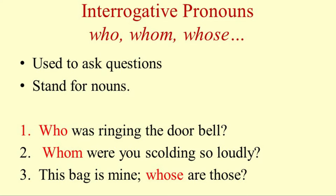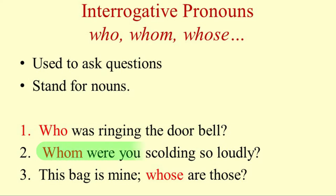Now here are some sentences that will make it clear. Who was ringing the doorbell? Whom were you scolding so loudly? This bag is mine. Whose are those? In these three sentences, the words who, whom and whose are used to ask a question. At the same time, they also refer to some noun. For example, in the first sentence, who was ringing the doorbell? — who stands for the person who was ringing the bell. Therefore, it is a pronoun and it is asking a question, therefore an interrogative pronoun.